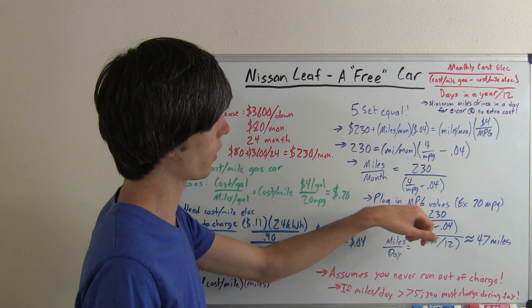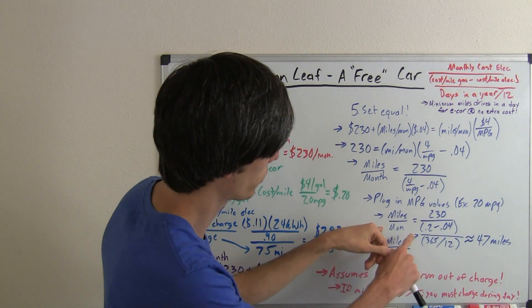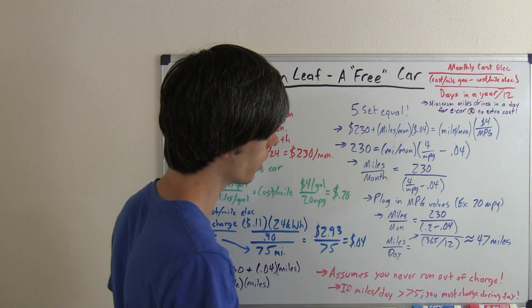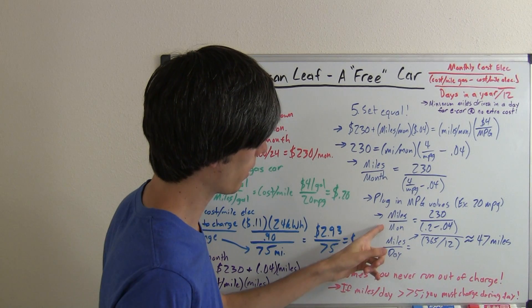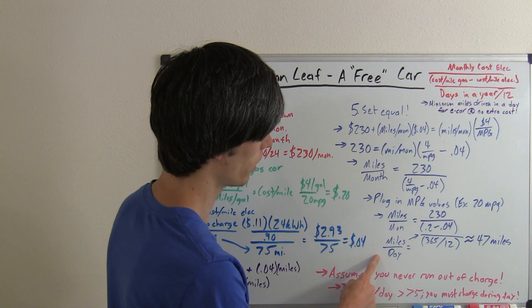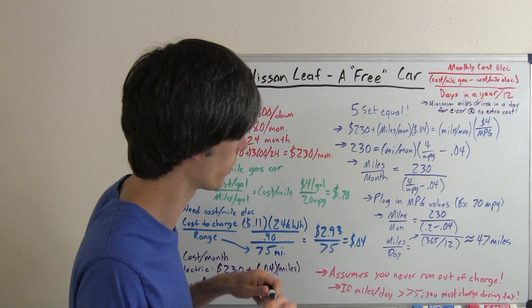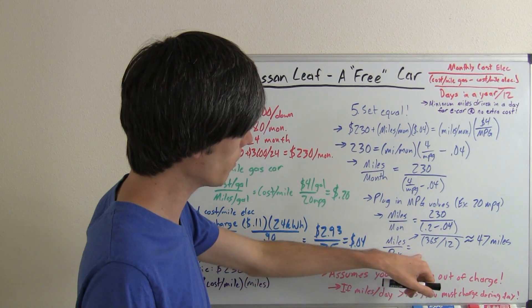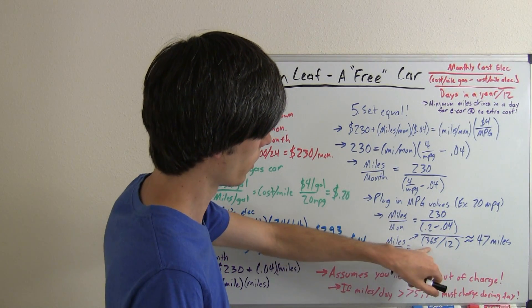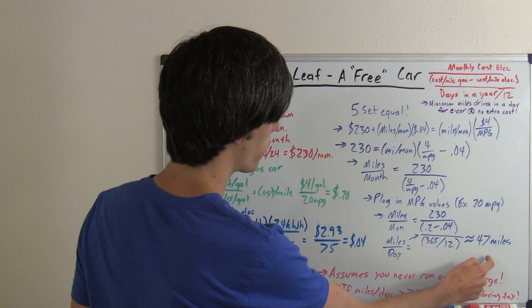If you plug in the current miles per gallon for your car, this will give you the miles in a month that you drive. We're going to go with our example of 20 miles per gallon. If your car gets 20 miles per gallon, you plug that in there, the miles per month you need to drive is equal to 230 divided by .2 minus .04. We're going to convert this into miles per day, because most people probably know how many miles they drive in a day, they may not know how many miles they drive in a month. Miles per day, you just take this number, the miles per month, divided by the number of days in a month. Number of days in a month, 365 divided by 12. That gives you 47 miles.